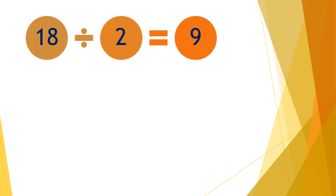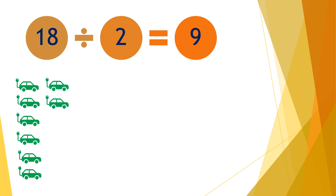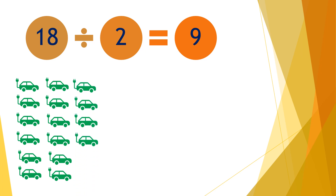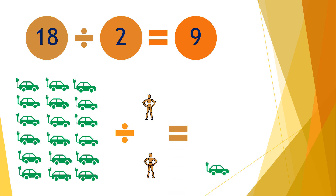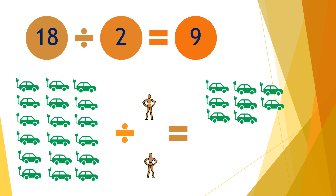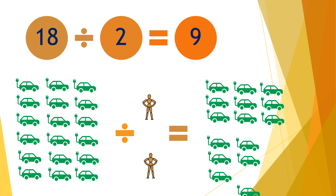Moving on to the next question: eighteen divided by two equals nine. So if you have eighteen cars and divide them by two people, each person will receive nine cars — one through nine for each person.